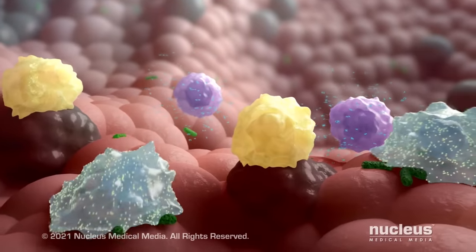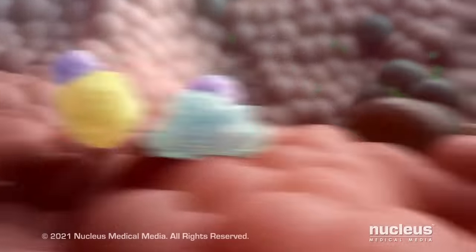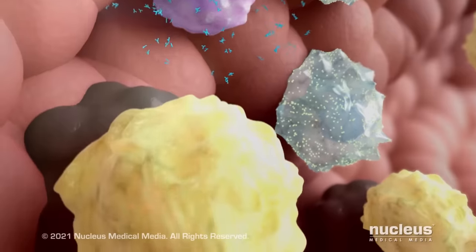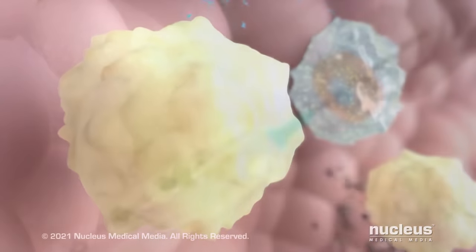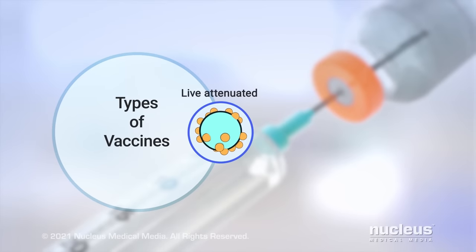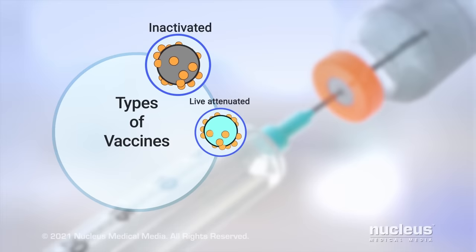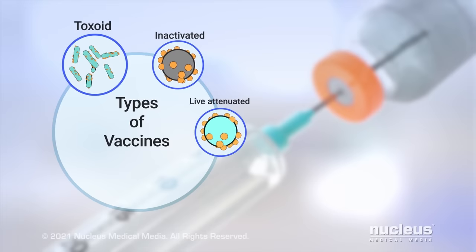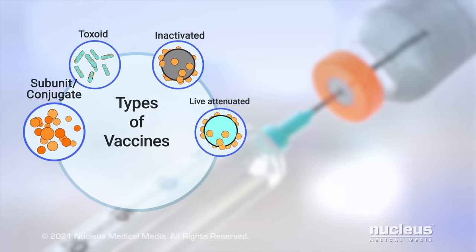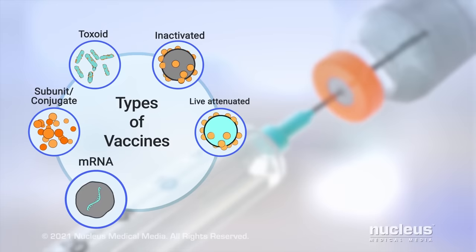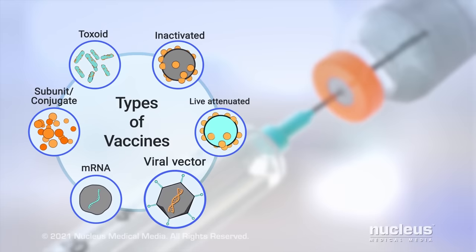As a result, if that germ infects your body later in life, your immune system is ready to fight the infection so that you don't get sick. The main types of vaccines include live attenuated vaccines, inactivated vaccines, toxoid vaccines, subunit and conjugate vaccines, mRNA vaccines, and viral vector vaccines.